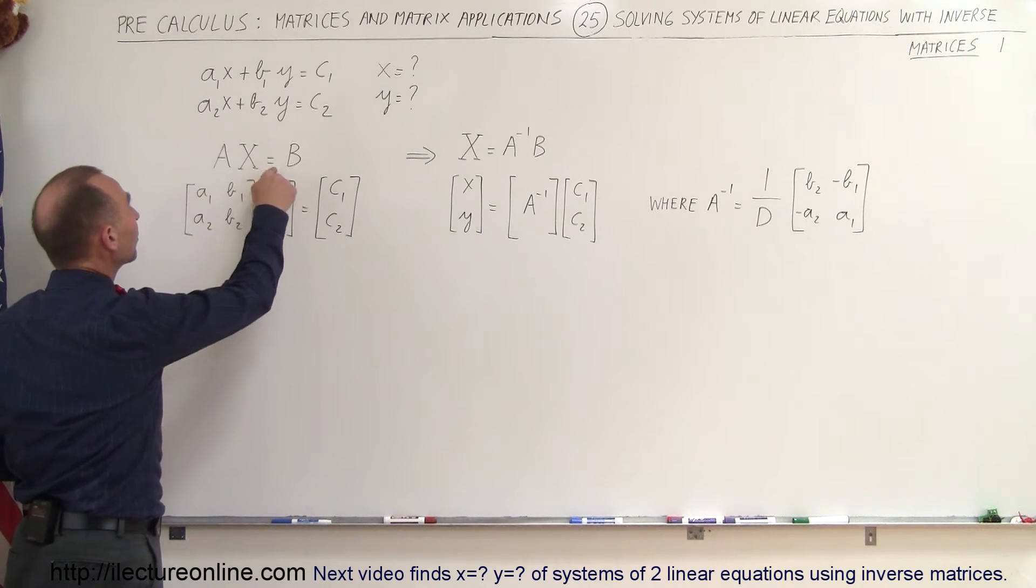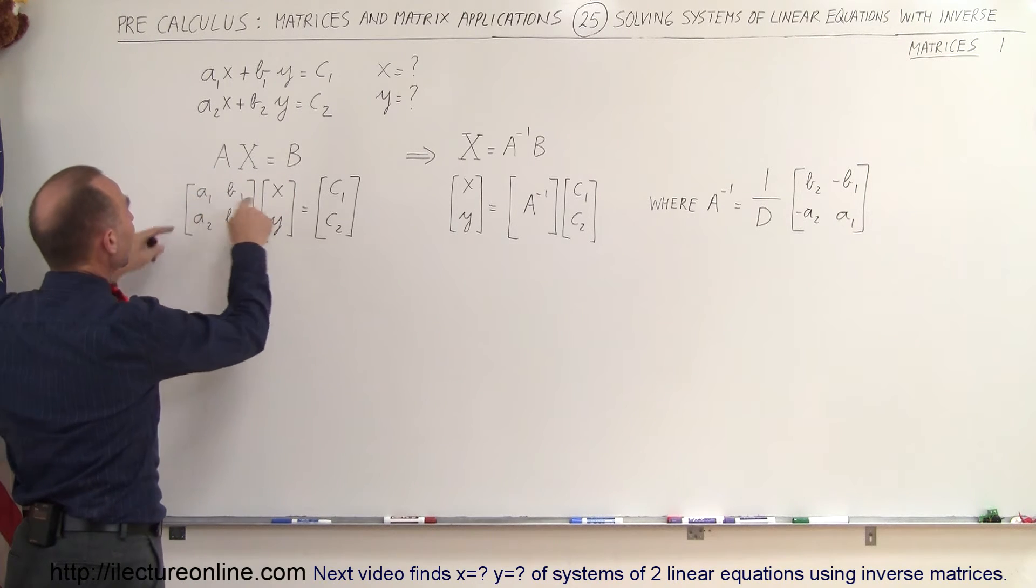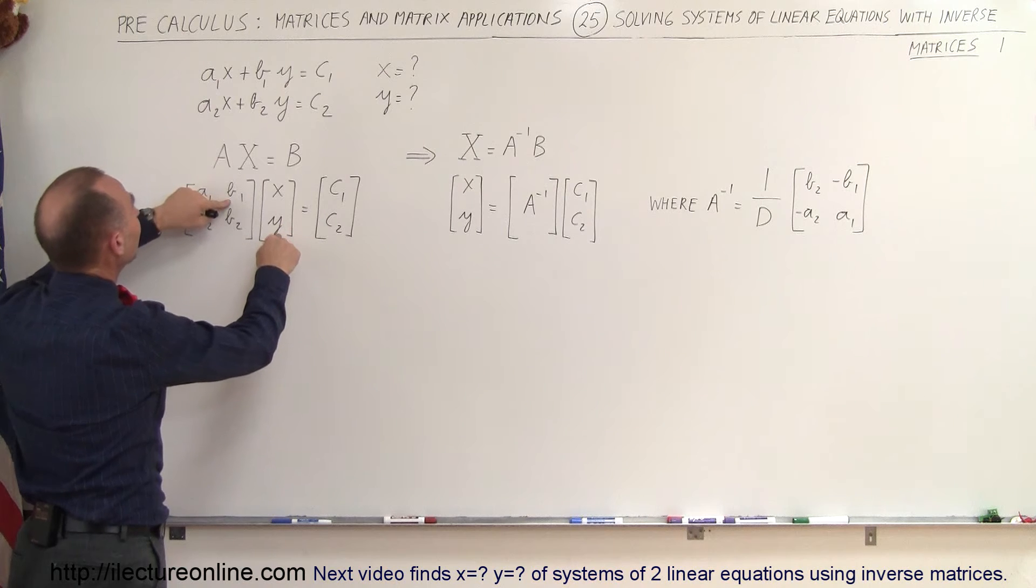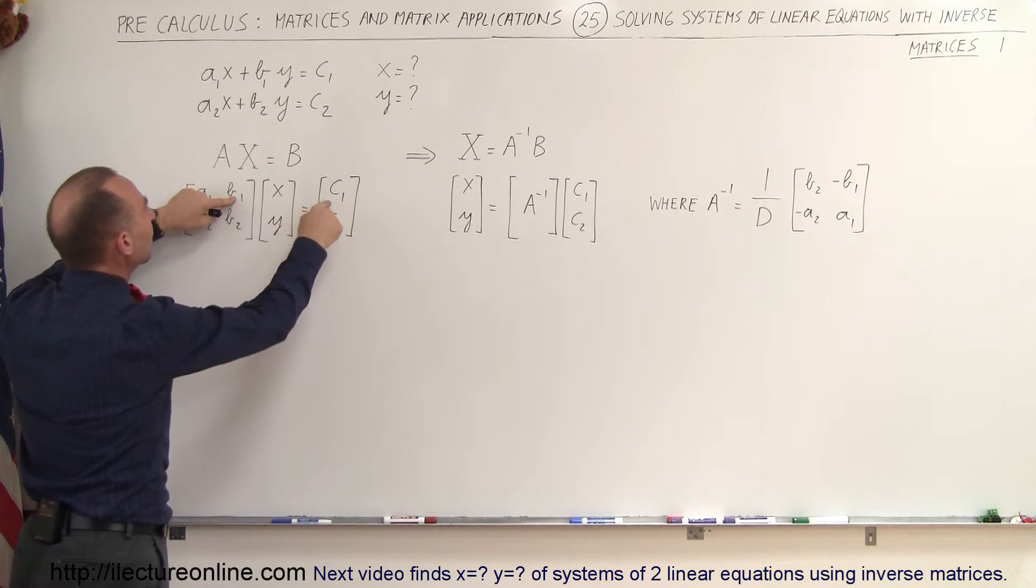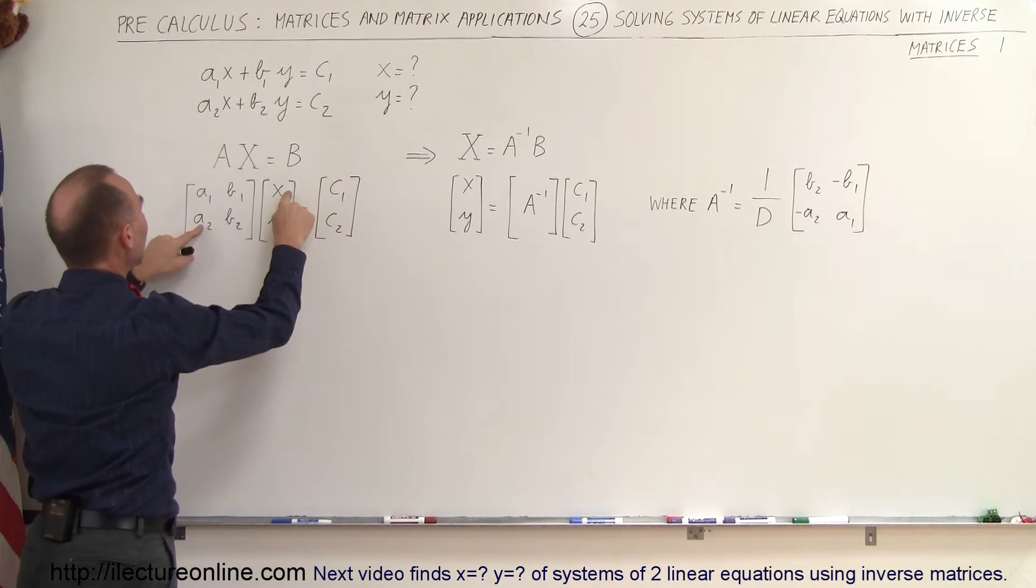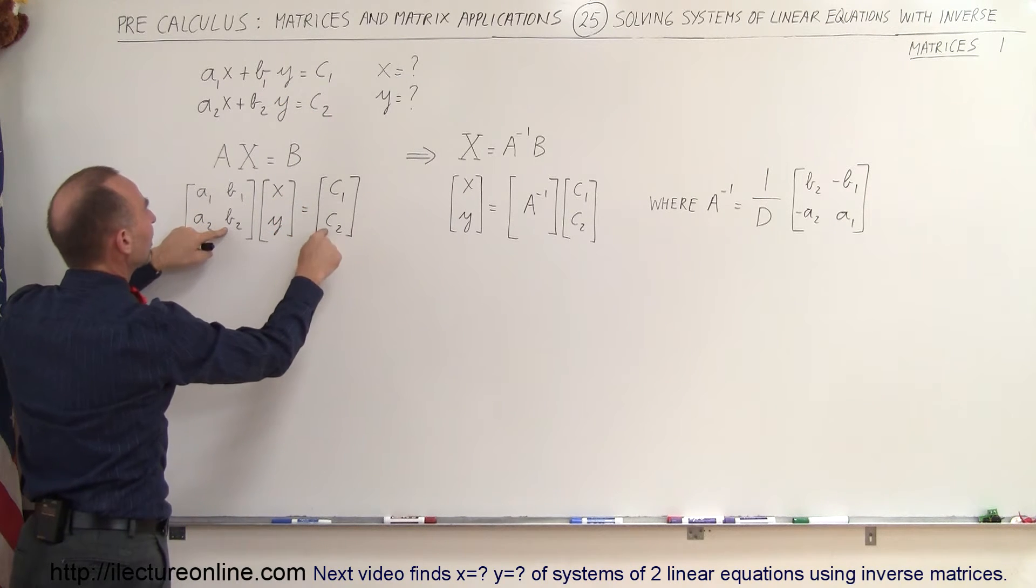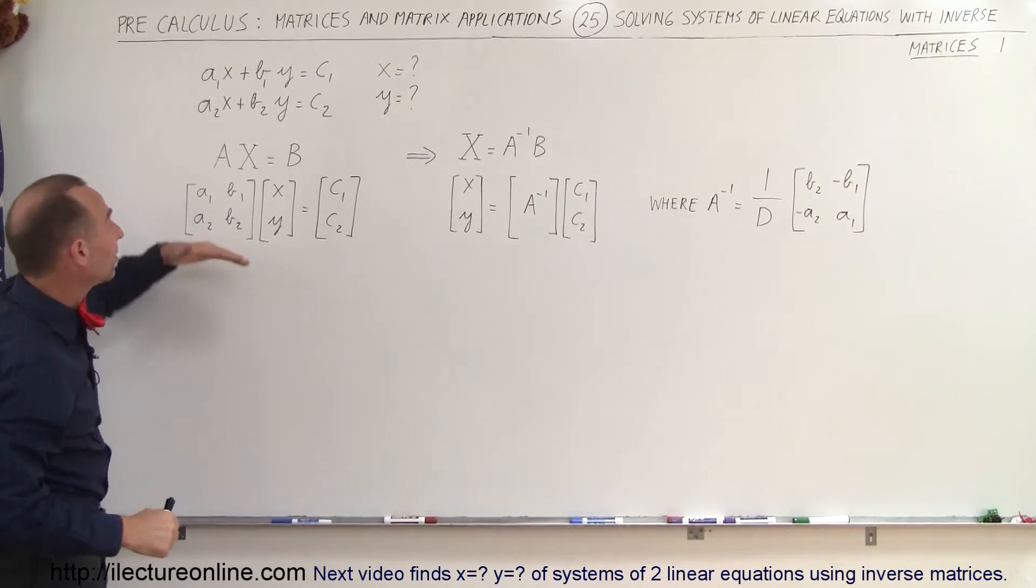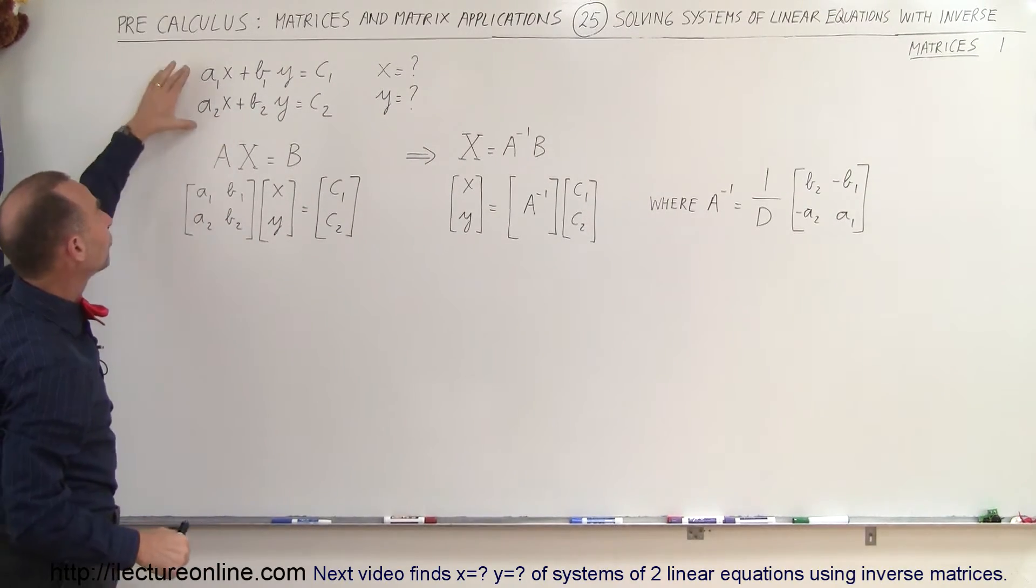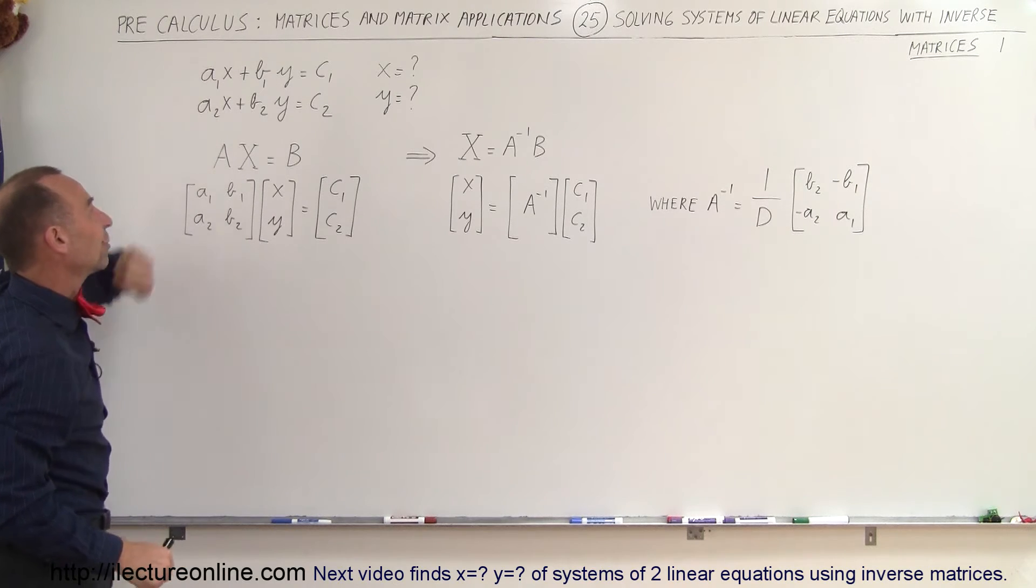Notice that A times x equals b. If we multiply A times x plus B times y, or I should say A1 times x plus B1 times y equals c, that gives us the first equation, and A2 times x plus B2 times y equals c2 gives us the second equation. So you can see that this is simply a representation of the two equations right here in the system of linear equations.